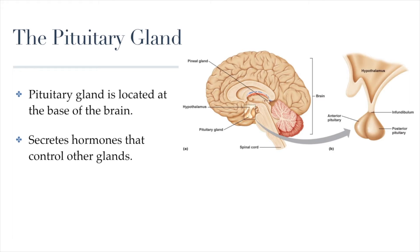For example, the pituitary gland will produce hormones that will stimulate the thyroid gland, producing their hormones. Or the pituitary gland will produce hormones that will stimulate the ovaries, producing estrogen and progesterone. And so it's called the master gland for that reason.